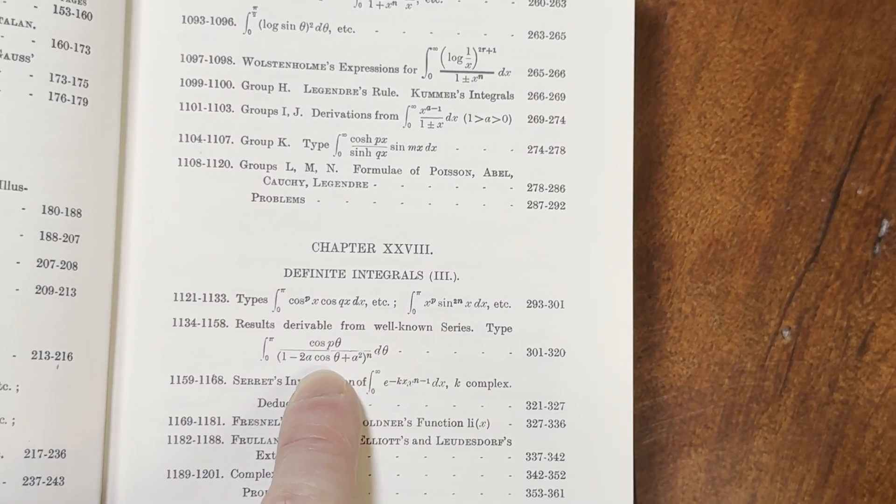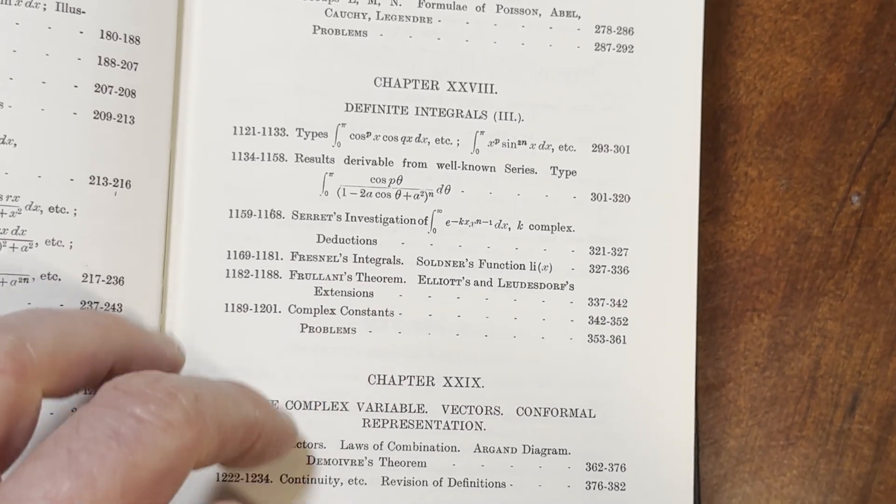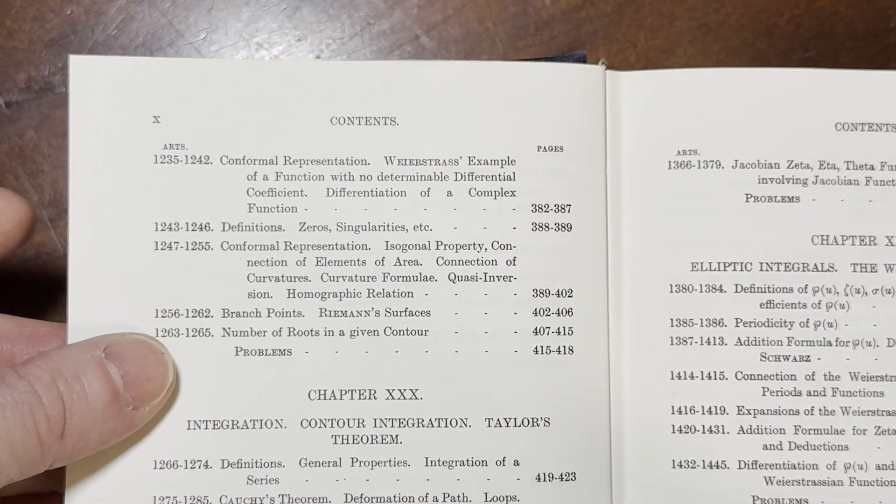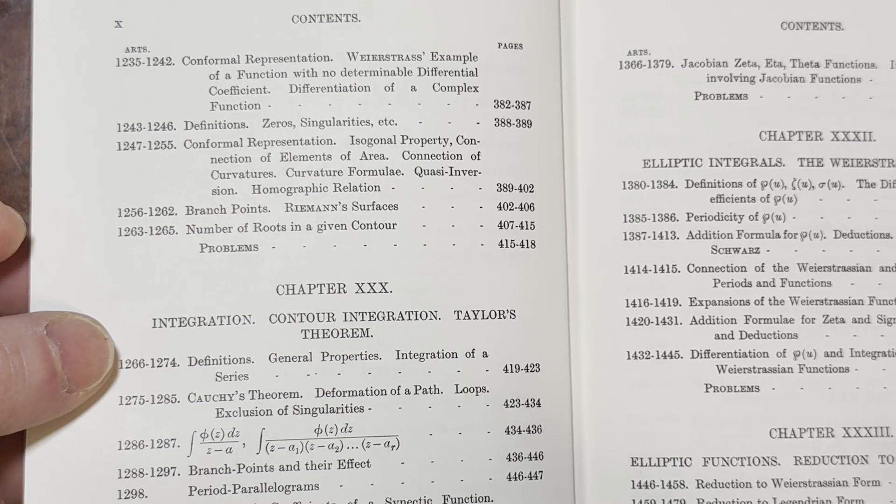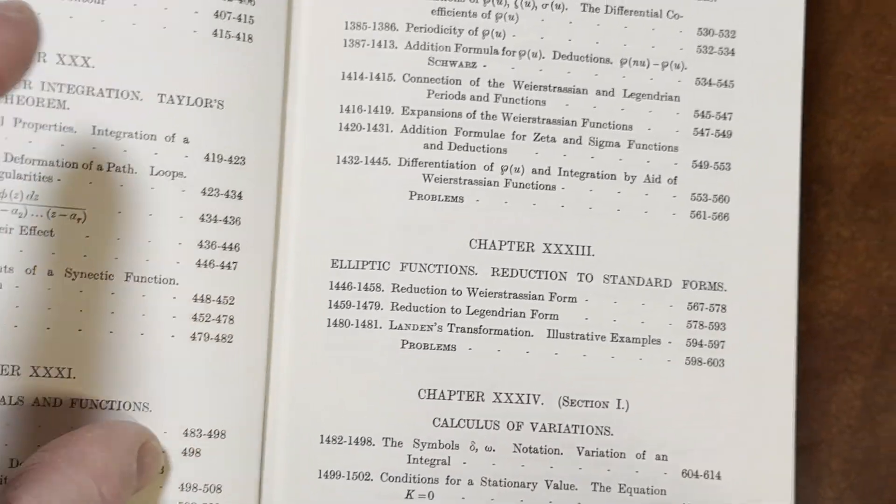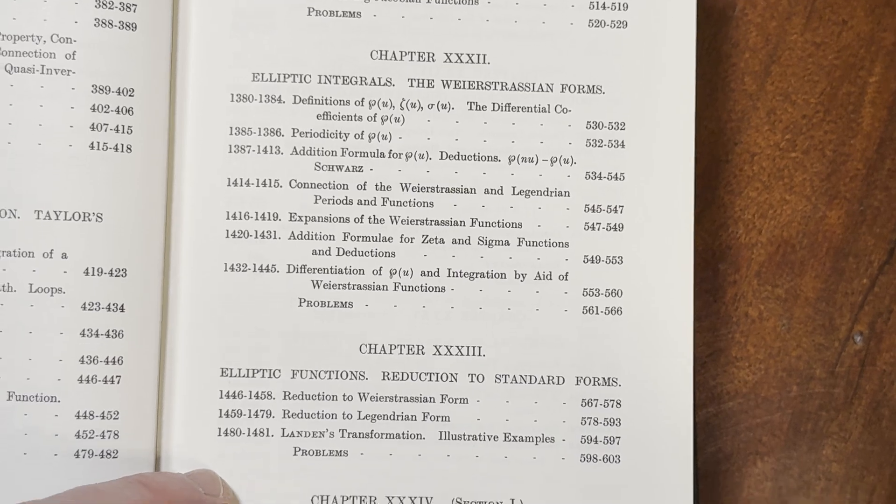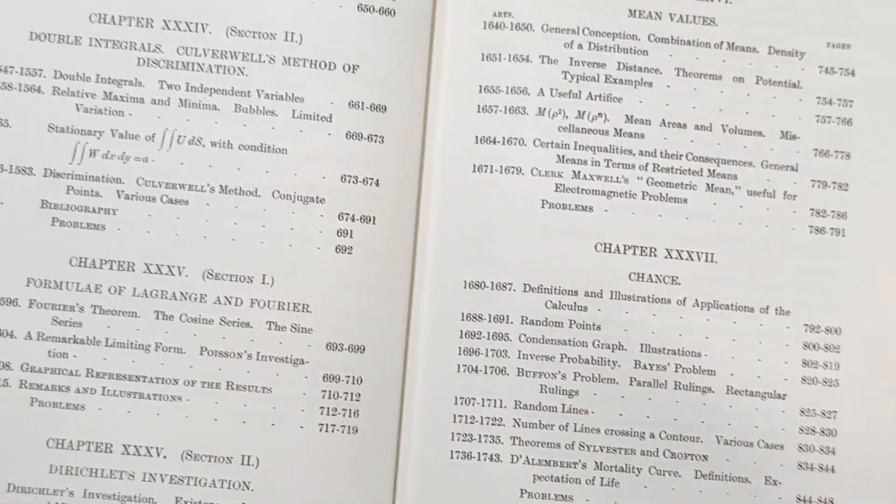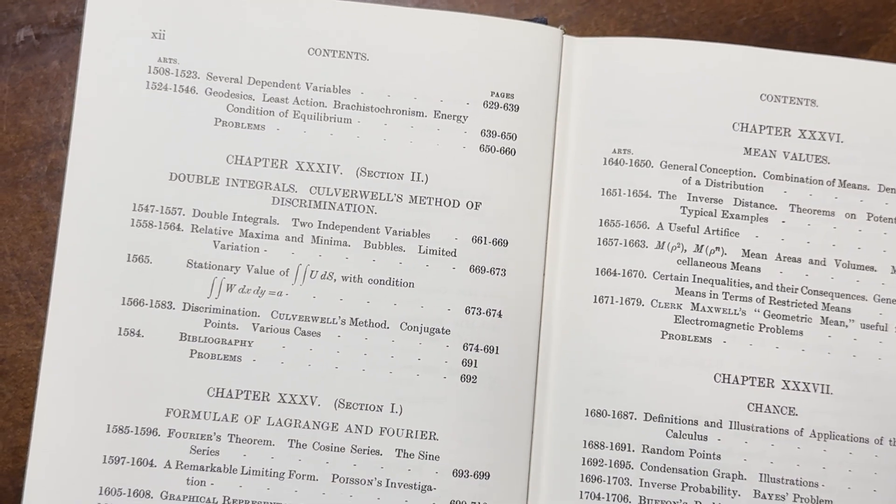So different types of integrals here. Let's turn the page over here so we can see what else we have. Wow. Contour integration. Elliptic integrals and functions. So a lot of advanced stuff that, you know, calculus of variations. Yeah. You don't find this in basic calculus books.